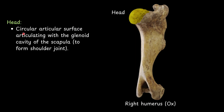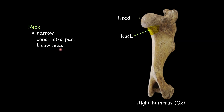First, the head. The head is a circular articular surface articulating with the glenoid cavity of the scapula to form the shoulder joint. Then, the neck. The neck is the narrow constricted part below the head.